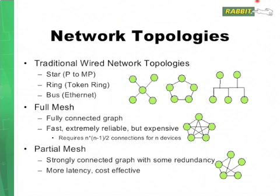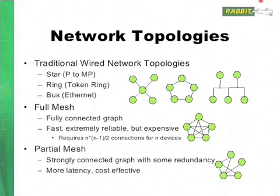Most of the other devices spend their time listening. Wireless networks to some extent can be viewed as a bus network since they transmit on the same frequencies. In contrast, a full mesh network is a fully connected graph as shown here, and every node can talk directly to every other node. These networks are extremely fast — you can just talk directly to whoever you want. However, they are also very expensive since they require n times (n minus 1) over 2 connections for n devices, which in big O terms is O(n²).